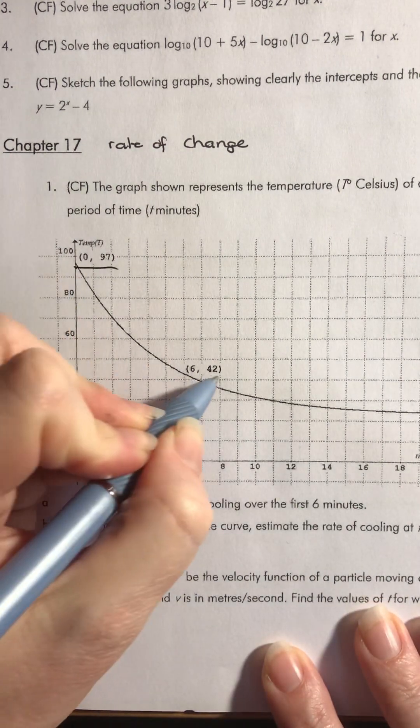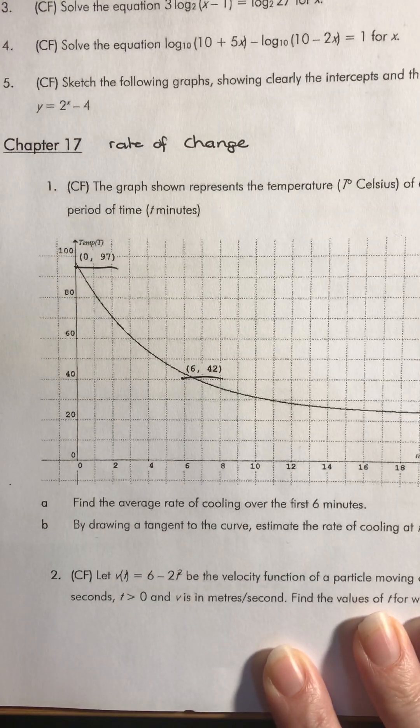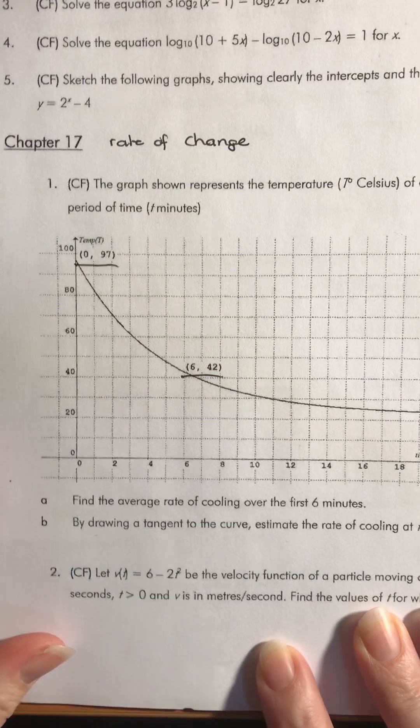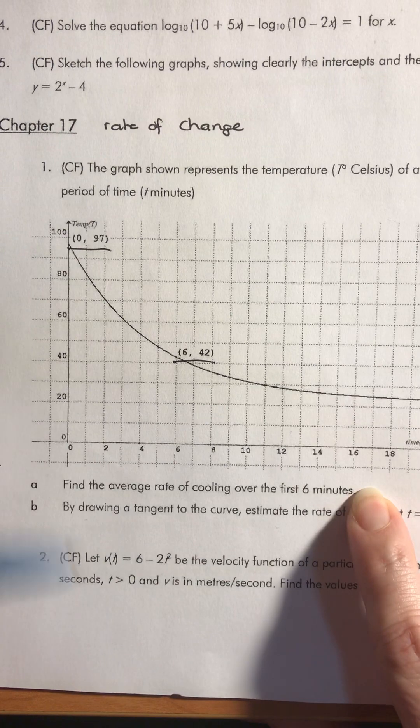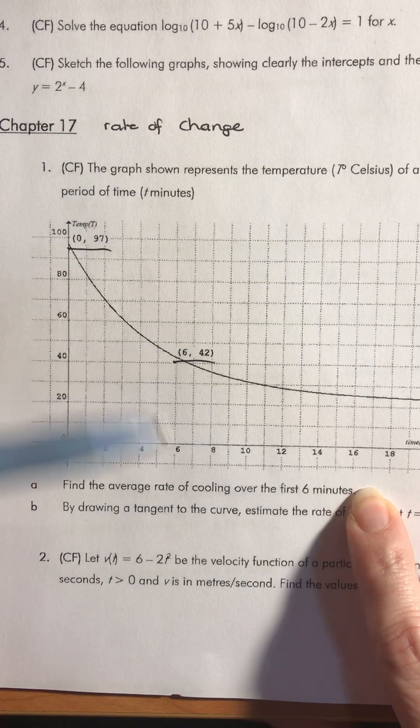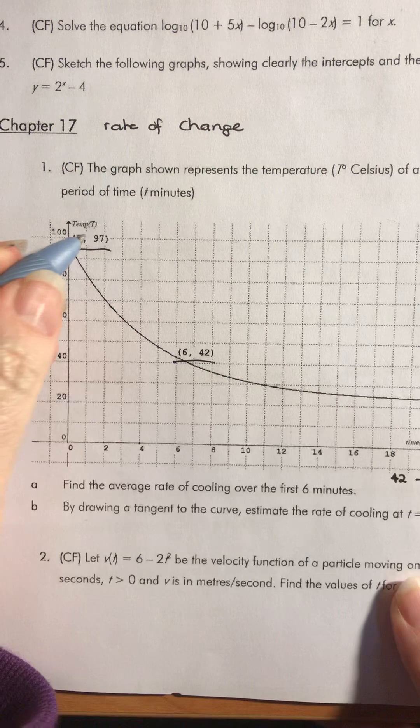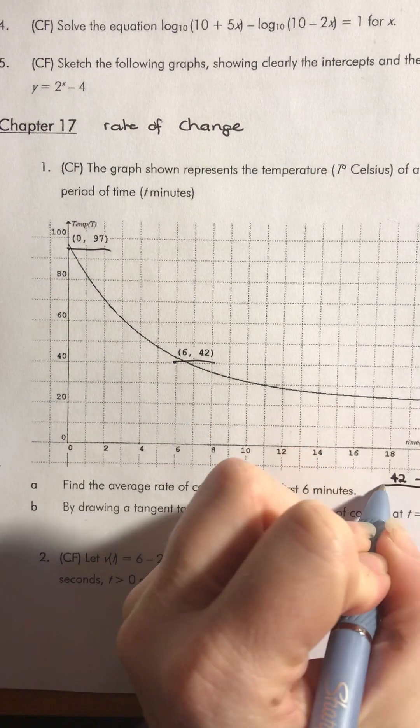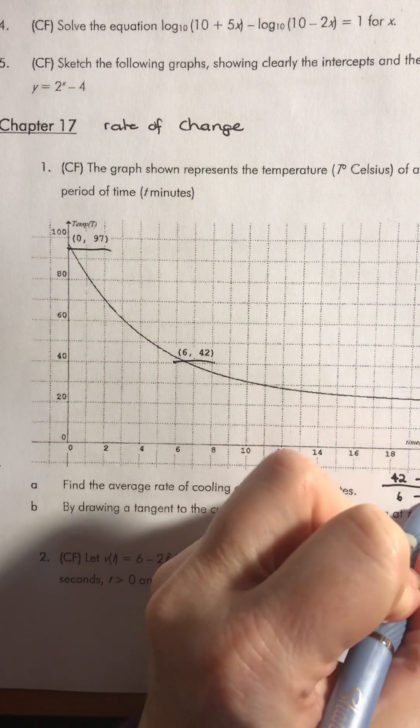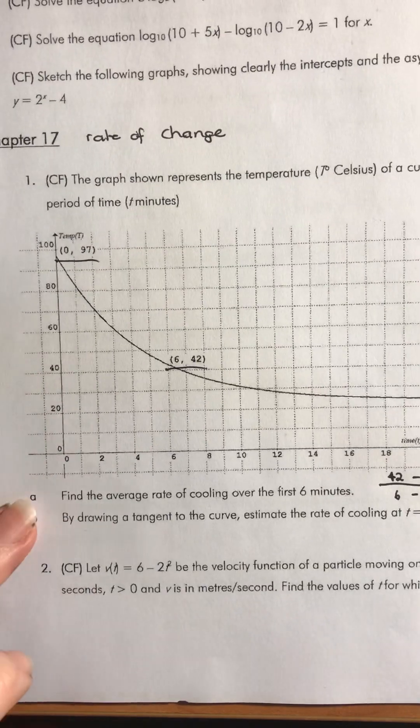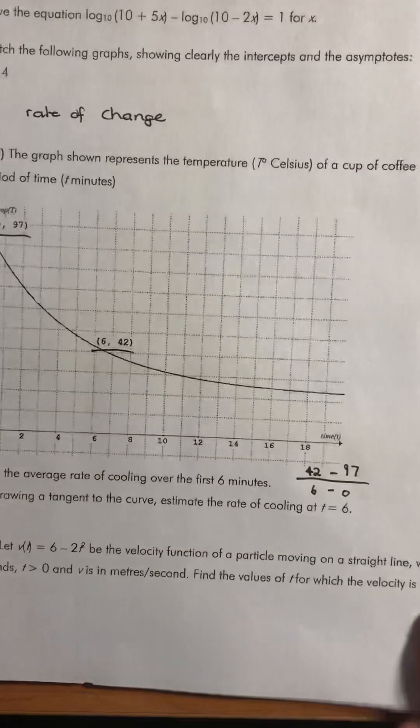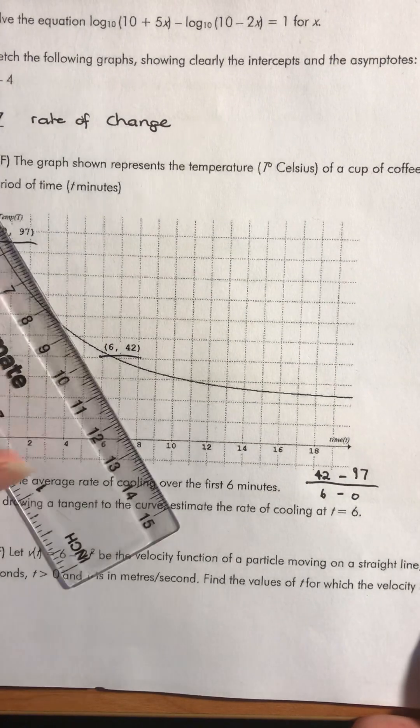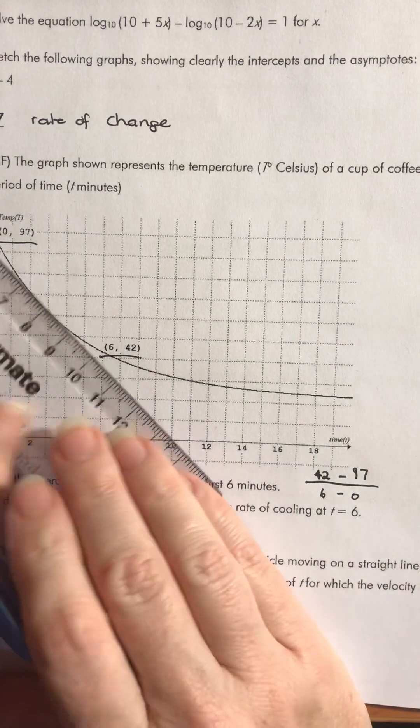Fortunately, those are the points that we have on our curve. So if we want to find the average rate of cooling over the first six minutes, we're looking at what the temperature is at six minutes, which is 42. We're taking away what it started as, and we've got six minus zero on the bottom, just like we're working out the gradient of that line.